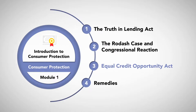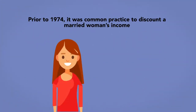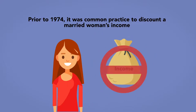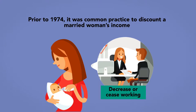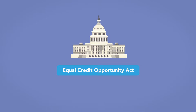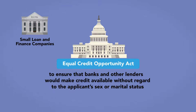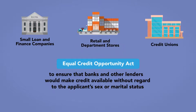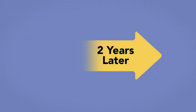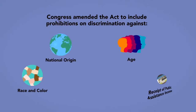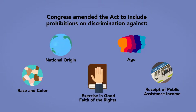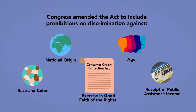Equal Credit Opportunity Act. Prior to 1974, it was common practice to discount a married woman's income, especially if she was of childbearing age, on the theory that she was more likely to decrease or cease working to raise children. In response to this practice, Congress passed the Equal Credit Opportunity Act in 1974 to ensure that banks and other lenders, such as small loan and finance companies, retail and department stores, and credit unions, would make available credit without regard to the applicant's sex or marital status. Two years later, Congress amended the Act to include prohibitions on discrimination against race, color, national origin, age, receipt of public assistance, and the exercise, in good faith, of rights guaranteed under the Consumer Credit Protection Act.